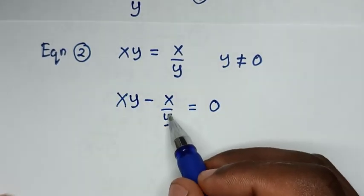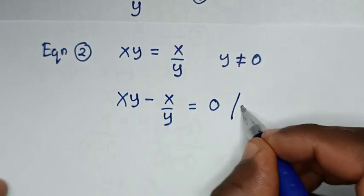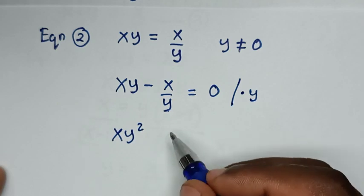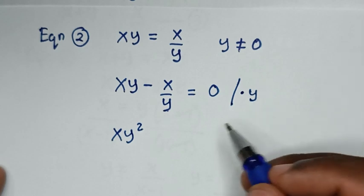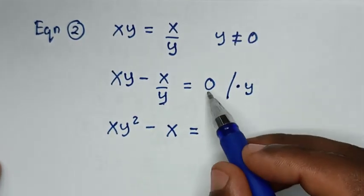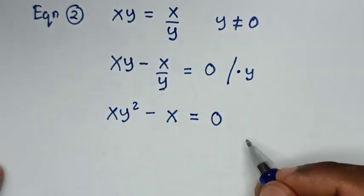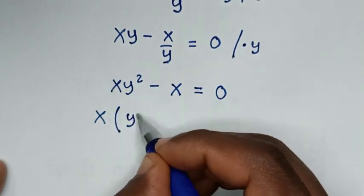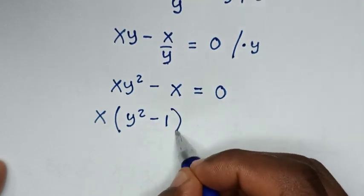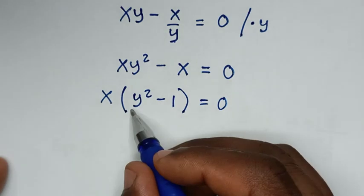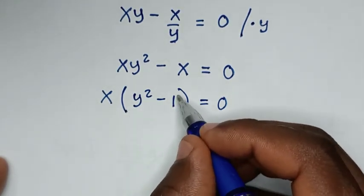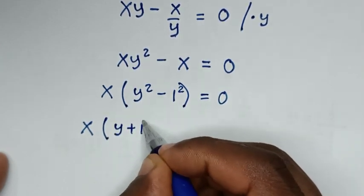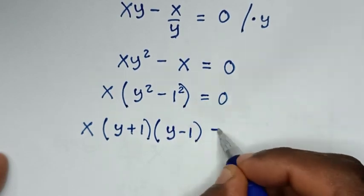To remove the denominator, we multiply the whole equation by y. Then y times xy gives xy squared, and negative x over y times y cancels, leaving xy squared minus x equal to 0. We can see x is common, so we factor: x times (y squared minus 1) equals 0. Since y squared minus 1 is a difference of squares, it factors as (y plus 1)(y minus 1), giving x(y plus 1)(y minus 1) equal to 0.